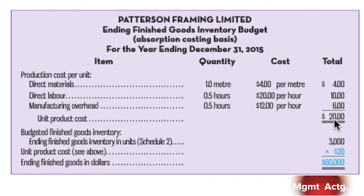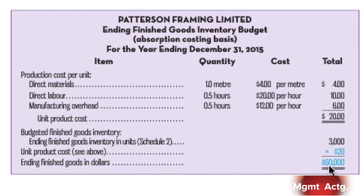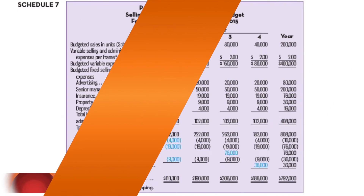We had to do all of these — direct materials, direct labor, and manufacturing overhead — to get us to twenty dollars per unit. Now we can take our ending finished goods inventory of 3,000 units from schedule two and multiply by that unit product cost to get the total dollar amount in finished goods. We need that dollar amount because we have to do a budgeted balance sheet for the end of the year — it's not enough just to have the units, we have to have the cost.